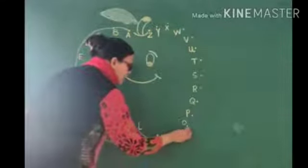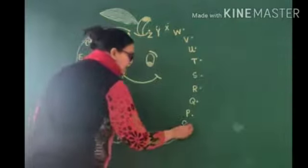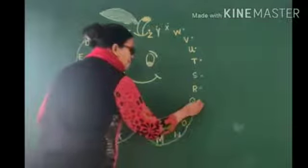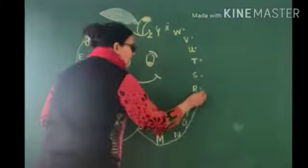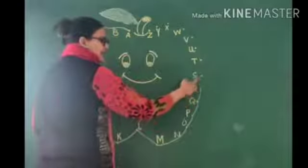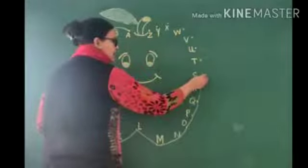And then O, and after O, letter P comes, Q, and then R. And after R, which letter? S, yes. So we will go here.